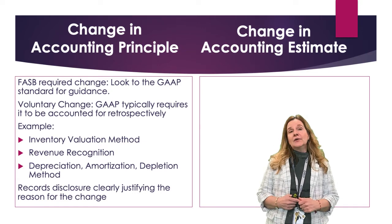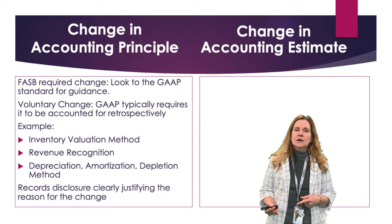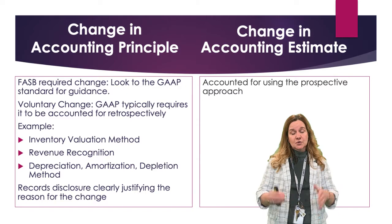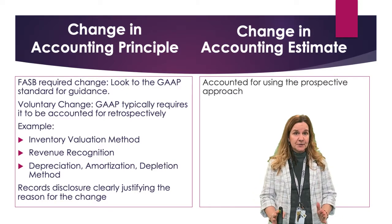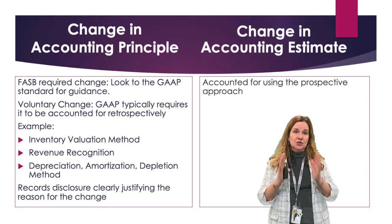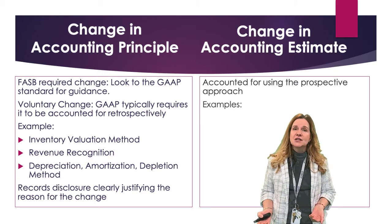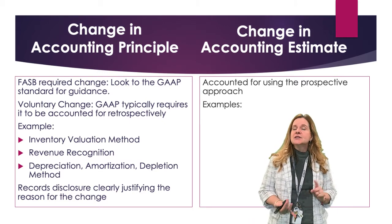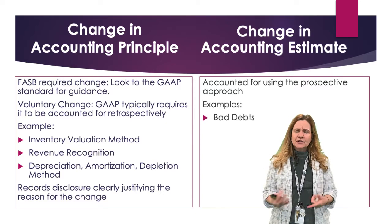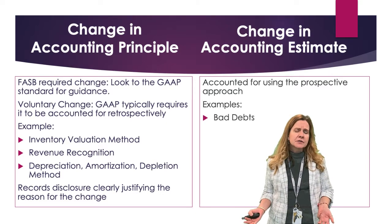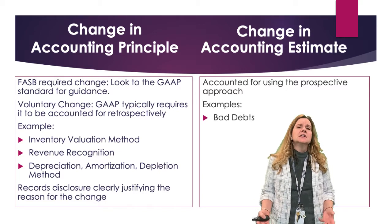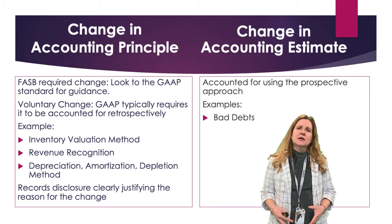Then we also have a change in accounting estimate. Estimates are recorded using the prospective approach. That means I just have to do the current period — I don't have to go back with the prospective approach, just the current period. An example of a change of estimate is changing the estimate for bad debt. When I'm doing the calculation for the allowance for doubtful accounts, I am using some kind of a percent, some kind of an estimate.